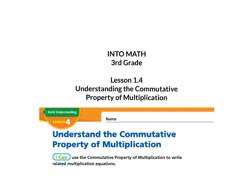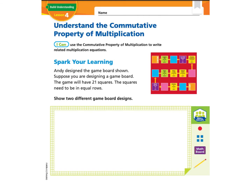This lesson is Into Math third grade, Lesson 1.4: Understanding the Commutative Property of Multiplication. The I Can statement is: I can use the commutative property of multiplication to write related multiplication equations. Please turn to page 17. If you need to pause this video to collect a pencil and turn to the page, please do that. When you've got all your materials, let's go to Spark Your Learning.